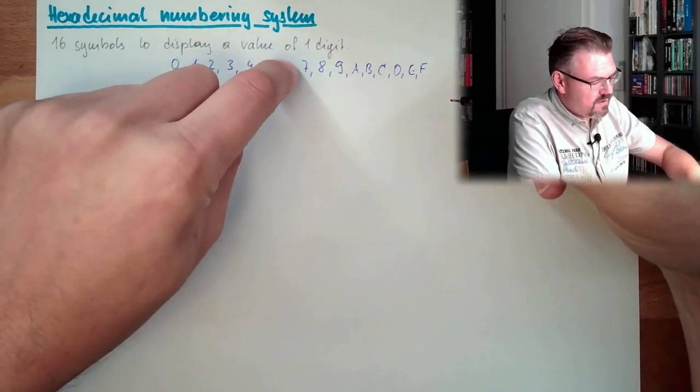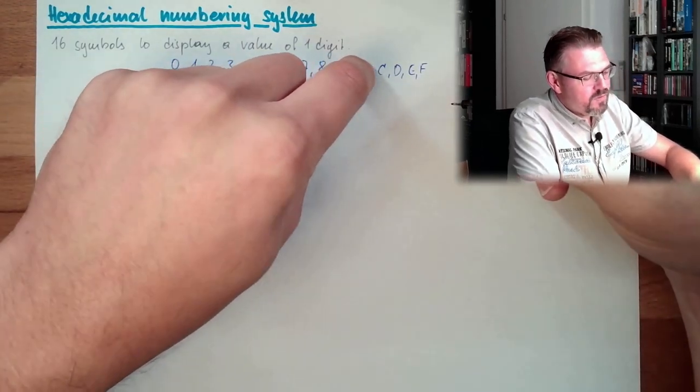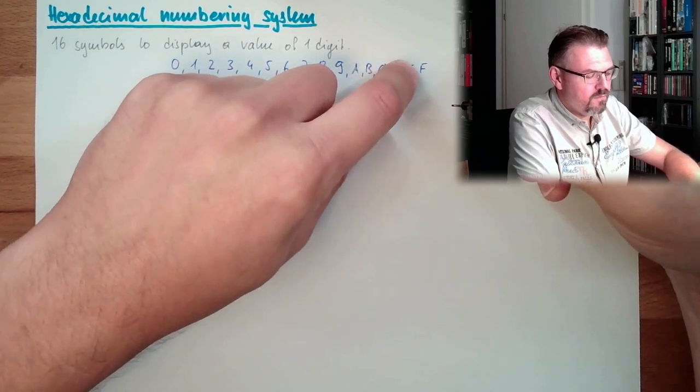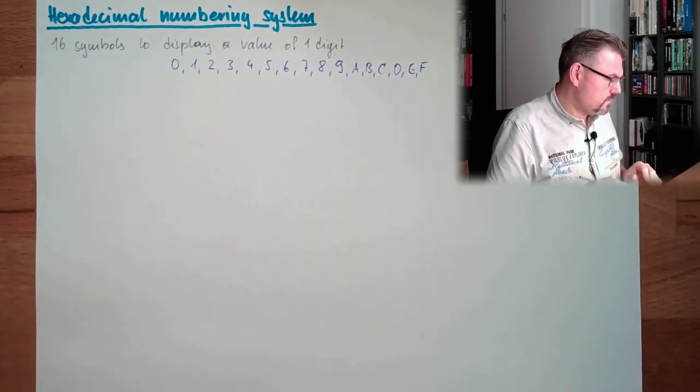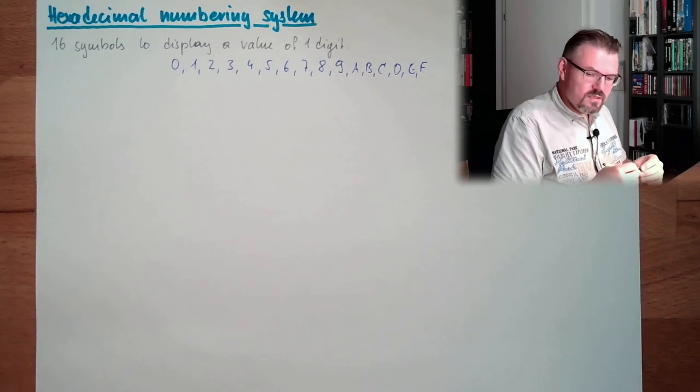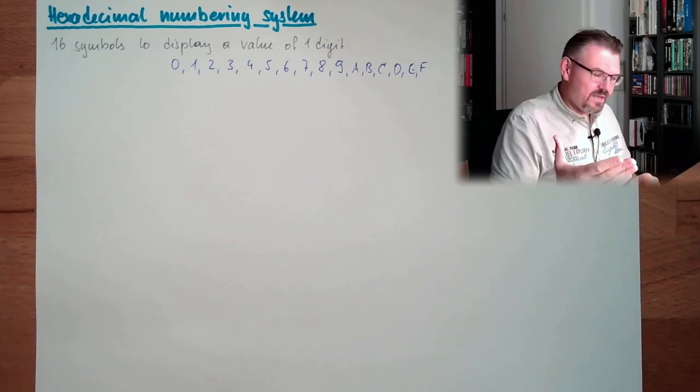1, 2, 3, 4, 5, 6, 7, 8, 9, 10, 11, 12, 13, 14, 15, 16. Sixteen different symbols. Okay? So this is typical hexadecimal.